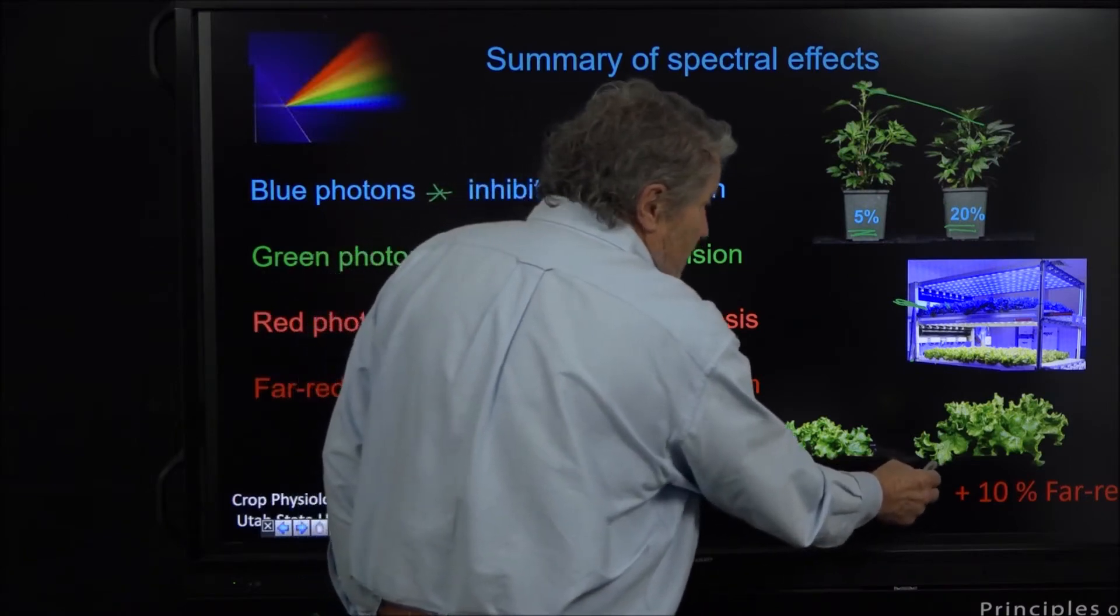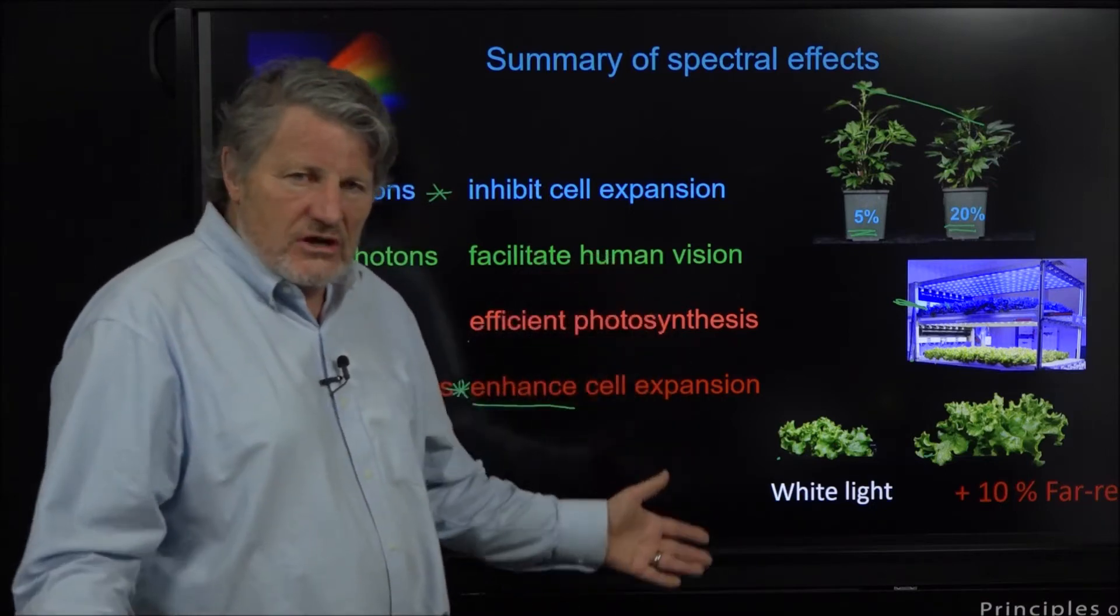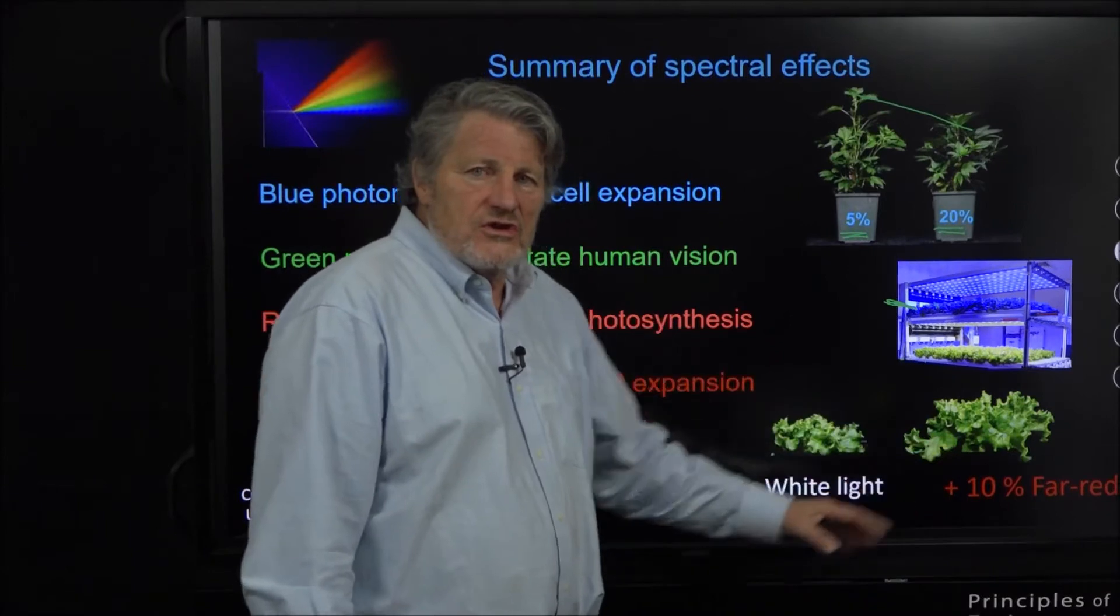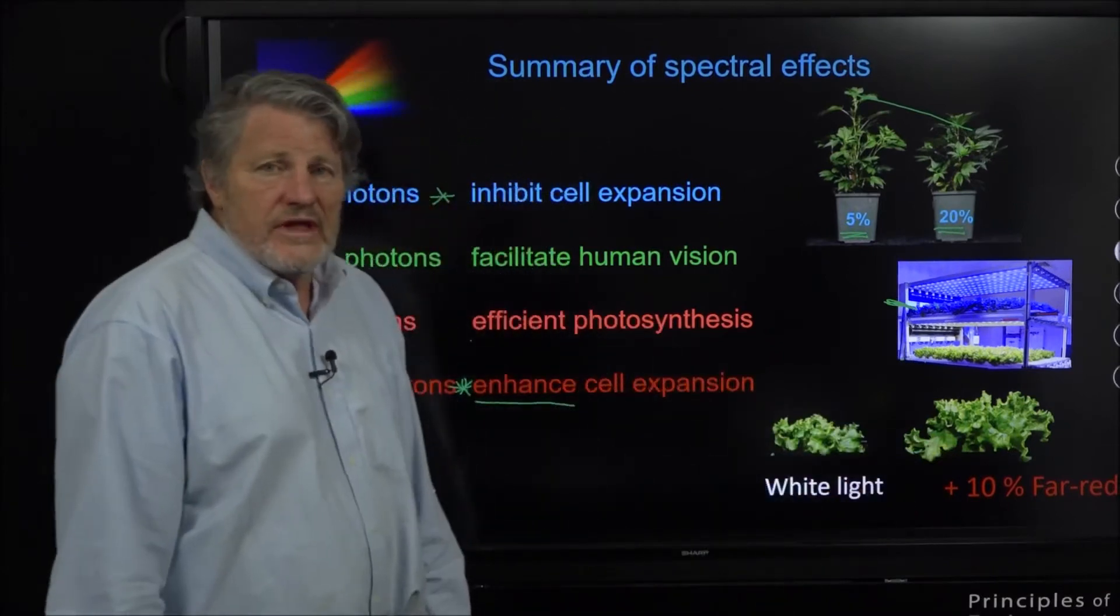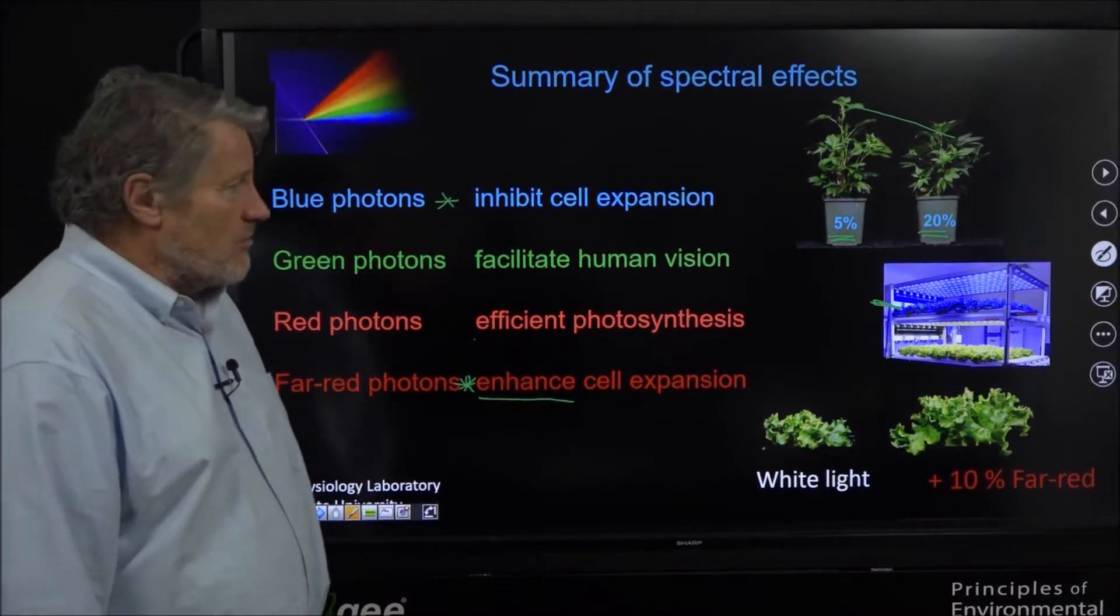Here's far red. This is white light and in this study Paul Kusuma added 10% of the photons as far red. They're like magic to lettuce - they dramatically improve cell expansion and we got a much bigger lettuce plant. So for lettuce production far red is a very powerful color of light.